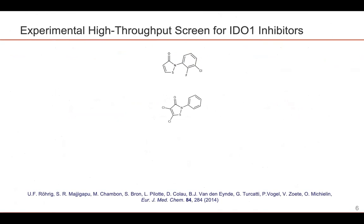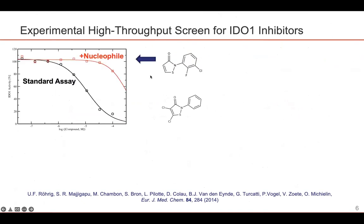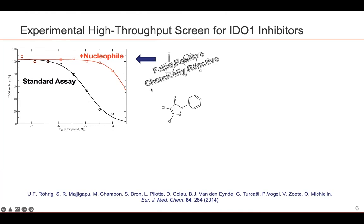A few years back, we did an experimental high-throughput screening in order to find new IDO1 inhibitors, and two of the hit compounds that we obtained are shown here. We then had to validate these compounds, and we found different things. For the first one, we found that it showed very nice dose-response curves in the standard assay shown in black here, but when we added a nucleophile to the assay solution, it lost all of its activity, showing that this compound was very probably a false positive acting through chemical reactivity with IDO1.